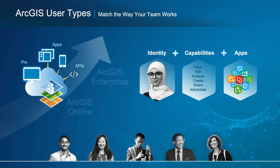With three new user types, you can match the way your team works with the capabilities and applications that they have access to. User types are a combination of identity, capabilities, and apps that align with the needs of the members in your organization. They're the building blocks that allow you to match team members with the capabilities and apps they need to complete their work.